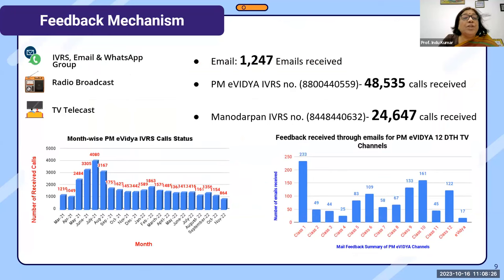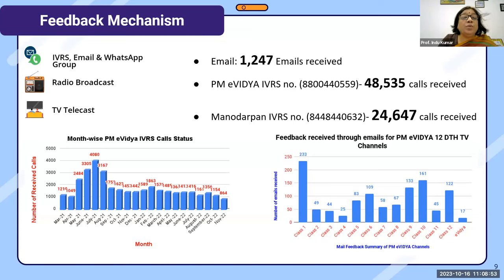This is the feedback mechanism we have created, because content disseminated through radio and television also needs to receive feedback. We have created an IBRS system, and we are receiving feedback through email and different WhatsApp groups, so we have developed a constant feedback mechanism.